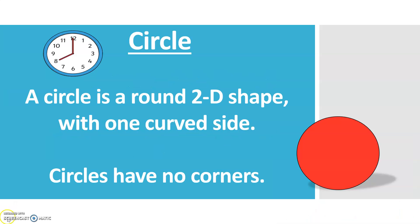Circle. This is a circle. A circle is a round 2D shape with one curved side. Circles have no corners. An example of a circle is a clock's face.